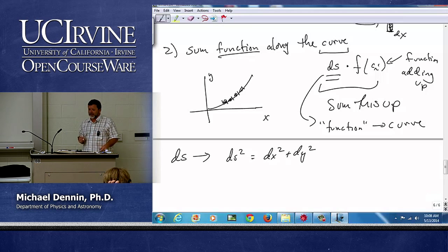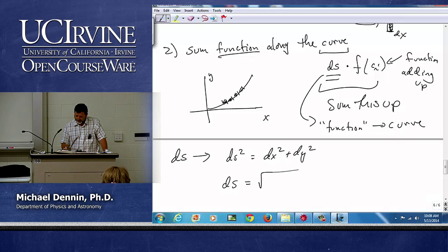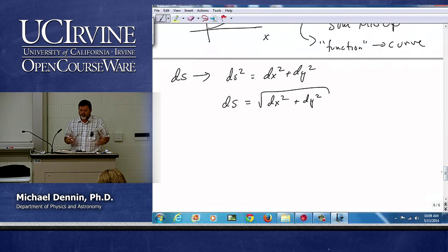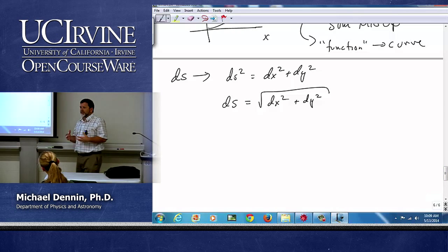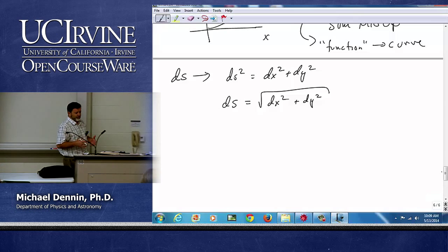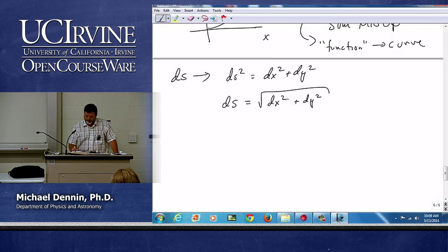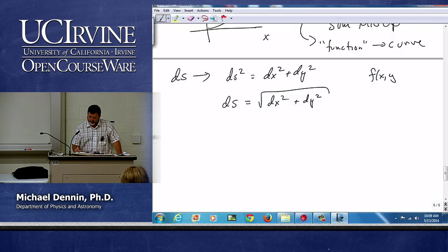Exactly. And since addition commutes, I can write it the other way. So ds, the thing we're going to integrate over, is fundamentally this. And this is where there's a couple of ways you can go about it. You want to, at this point, pick a parameterization for your curve. You have some curve in space that's basically f of xy equals a constant, if we're doing 2D.